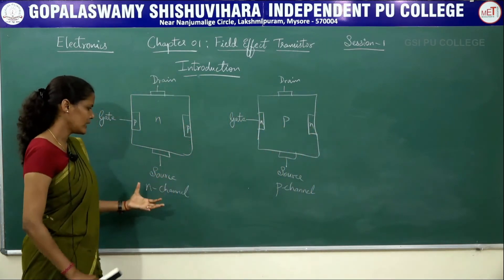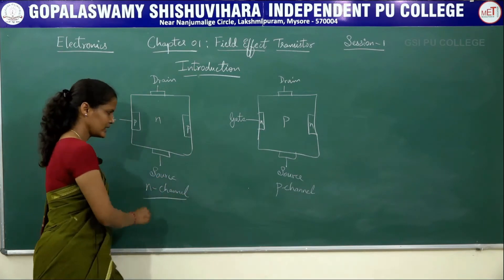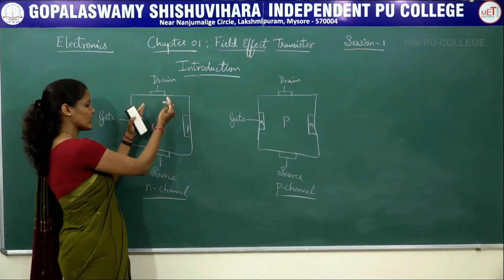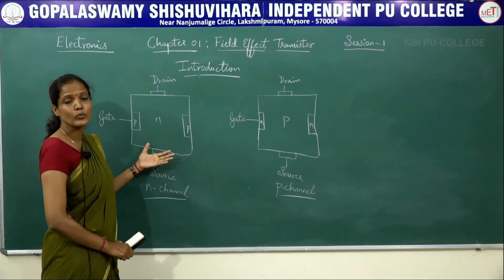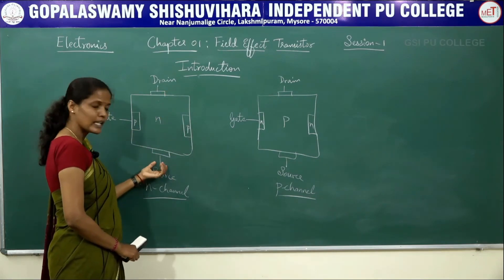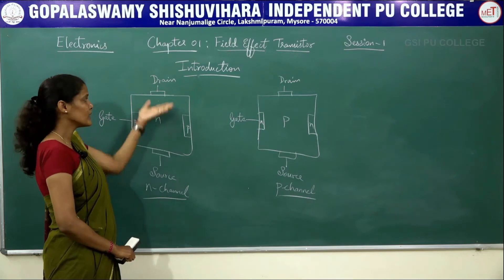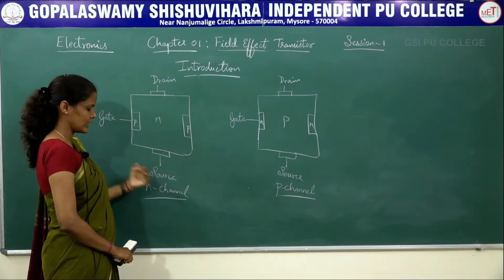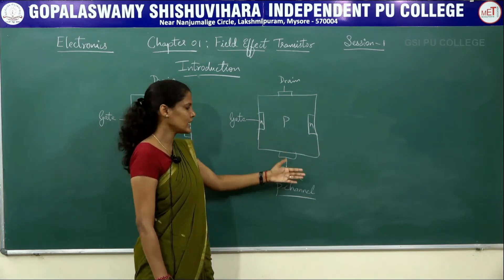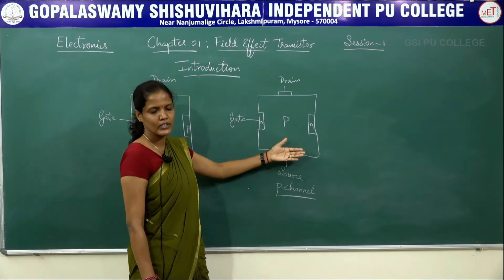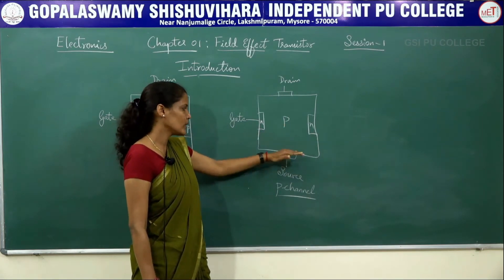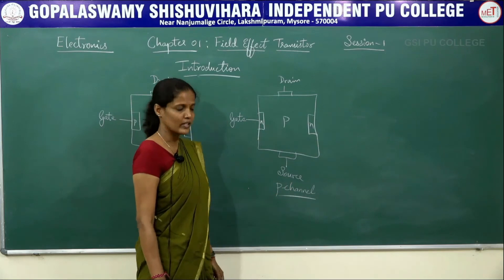Why is one called N channel JFET and the other P channel JFET? We see a channel-like structure through which the charge carriers will be flowing. In the N channel JFET, the N type region is the channel through which the charge carriers flow from one terminal to the other. Similarly, in P channel JFET, the P type region is the channel through which the charge carriers — either electrons or holes — will be flowing from one terminal to the other.